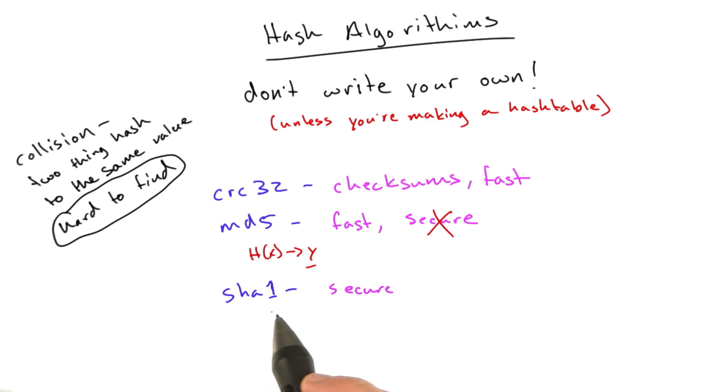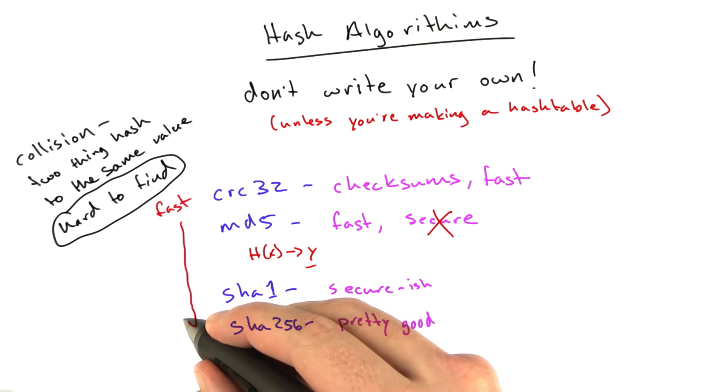But for things going forward, you should really use something like, for example, SHA-256, which is, as you might guess, just kind of a bigger version of SHA-1. It's actually not the algorithm that I believe has changed as well. We'll say this one is secure-ish, and this one is pretty good. It's going to take some time.